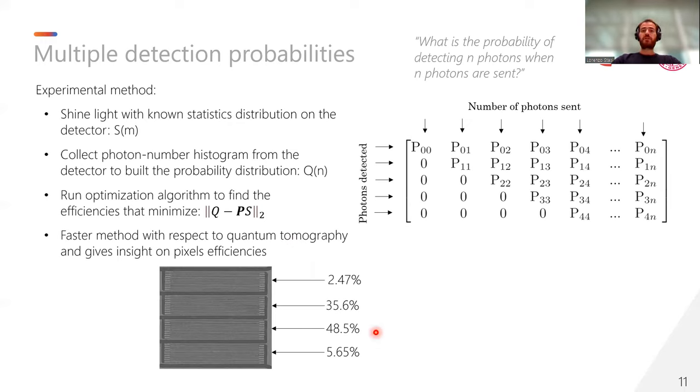Here, I reported the pixel efficiency for the detector that I showed you since now, and from the values we can see that they perfectly reflect the Gaussian distribution of light in single-mode fiber. In fact, the outer pixels possess very low efficiency because they almost receive no light. Furthermore, since their efficiencies are not perfectly symmetric, we can assume that there is a little misalignment between the fiber and the detector itself. And this information can only be accessed through our method and not from quantum tomography.